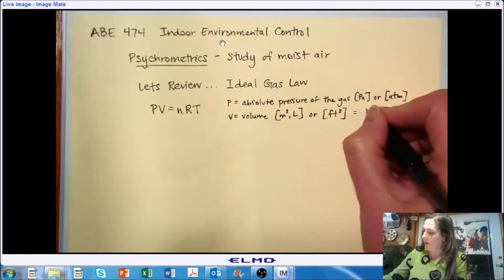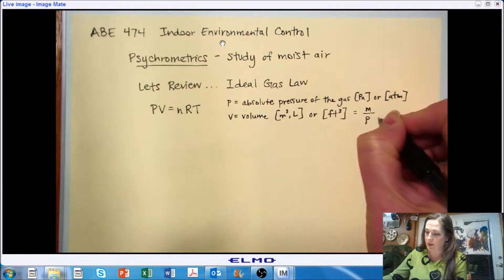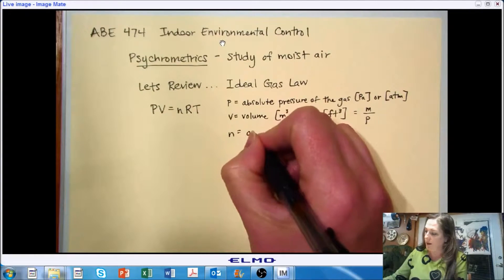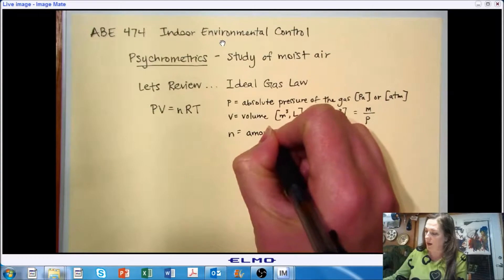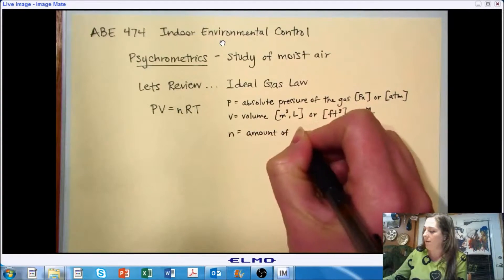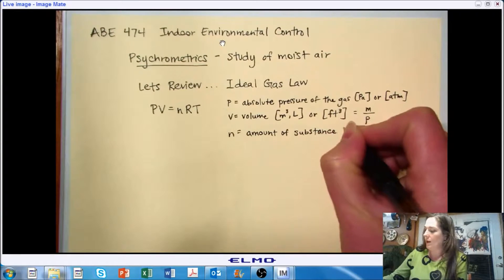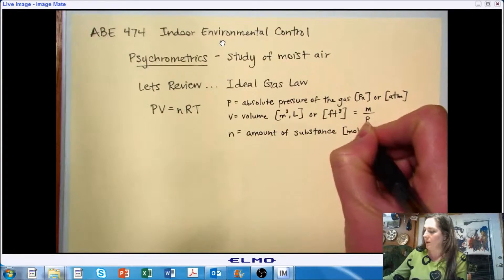And volume is mass over density. It could also be represented as mass over density. N is our representation of the amount of substance that we have. And we represent that with moles, either set of units.